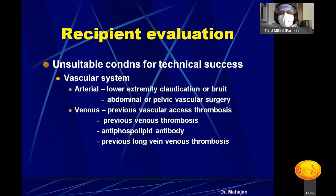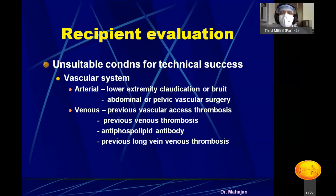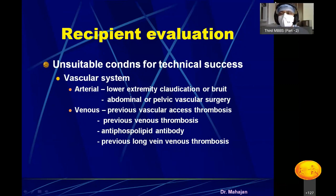There are unsuitable conditions for technical success related to the vascular system. The vein and artery of the recipient must be in excellent condition, because they will be used for anastomosis. After transplantation, arterial and venous flow must be excellent to ensure good kidney perfusion and urine output. There should be no thrombosis, claudication of the lower extremity, or atherosclerosis of the vessels — all must be addressed prior to transplantation.